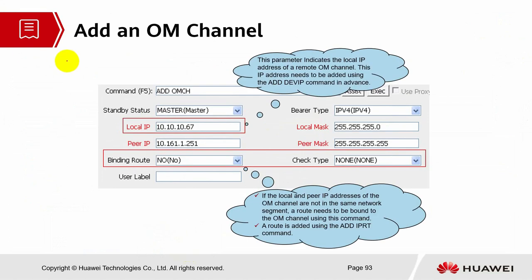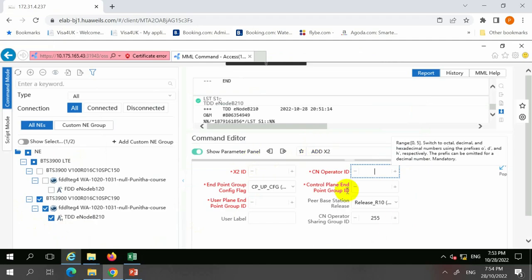Last but not least, we add the OM channel. The OM channel is very important because we bind the local IP from the eNodeB side towards the peer IP, which is the MAE. This is the main remote maintenance link between your actual site and the remote site. We also need to add the OM channel in the device IP — add the logical IP first, then bind that in the OM channel. Let's look into this command.